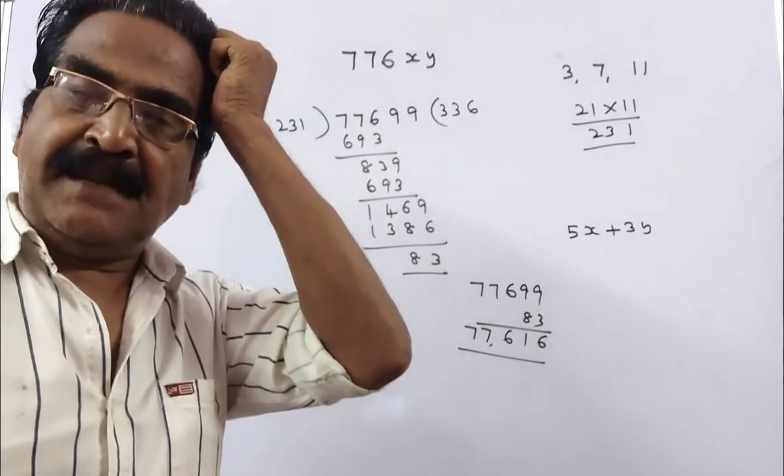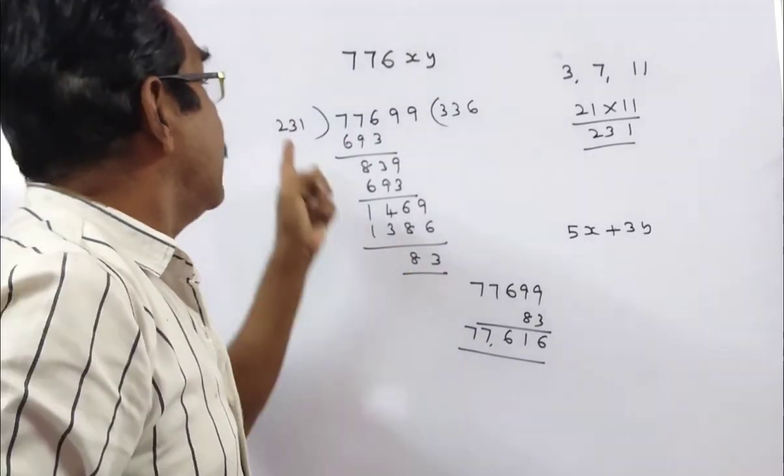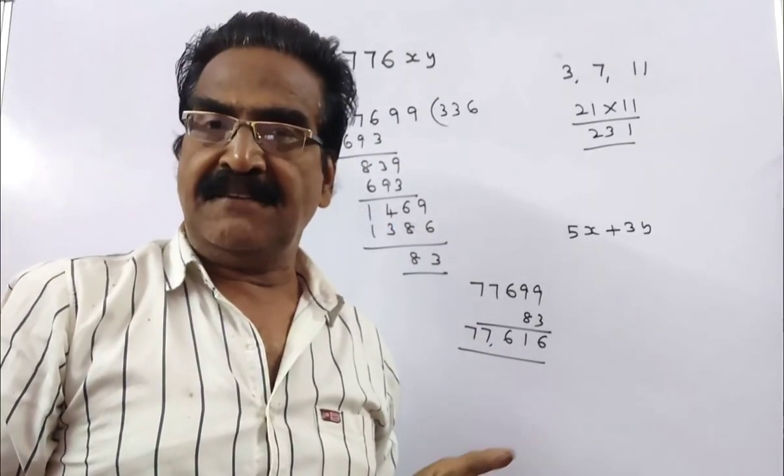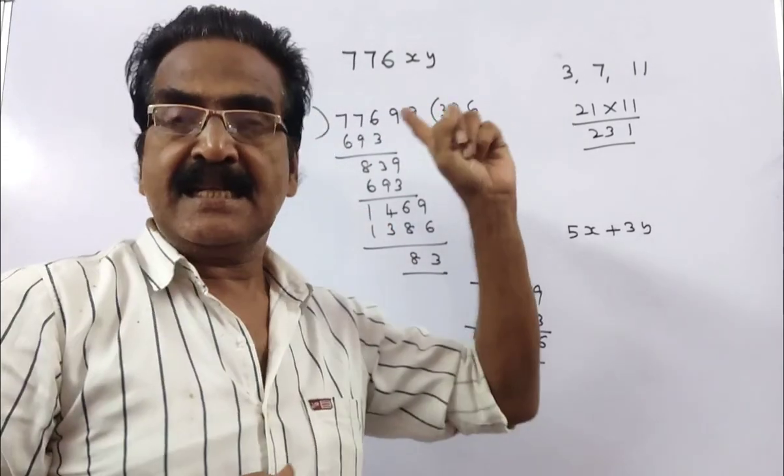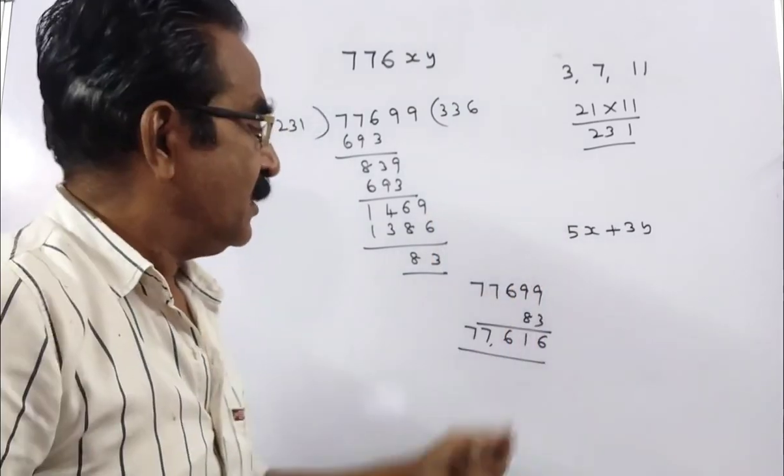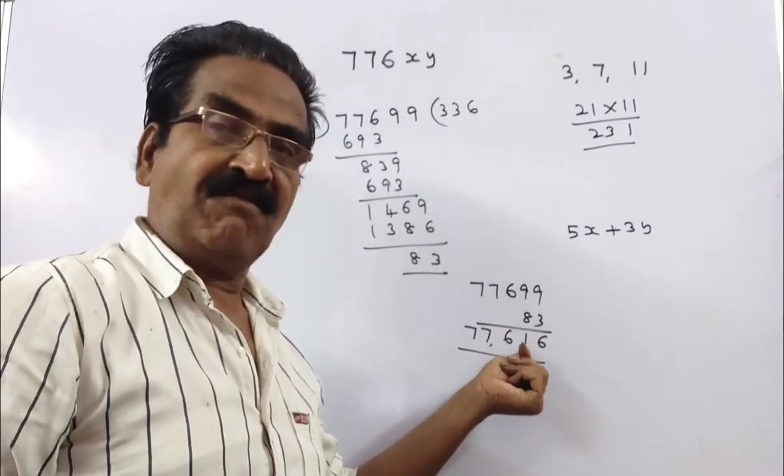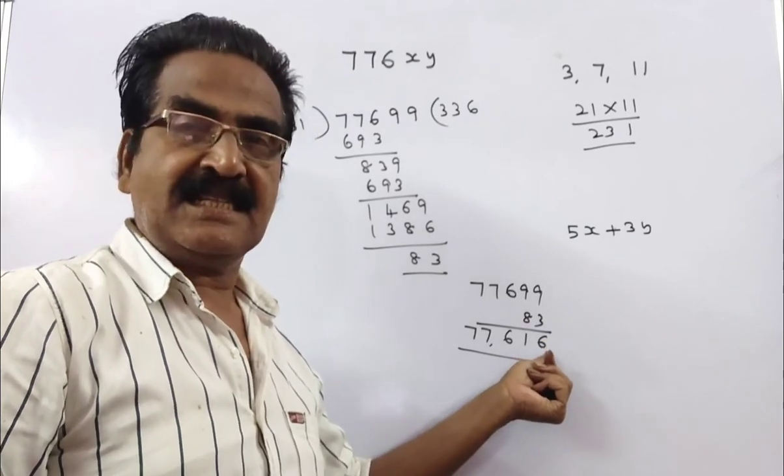So this is the number, friends. This is the number that is divisible by 231. In other words, 3, 7, and 11. So here the value of X is 1 and Y is 6.